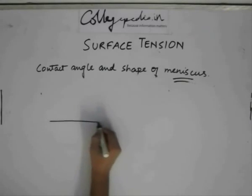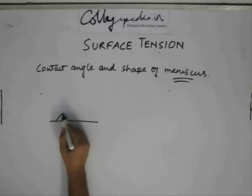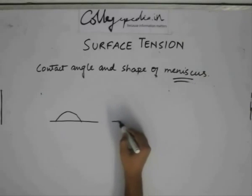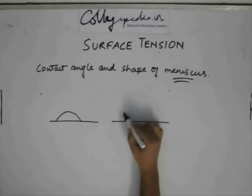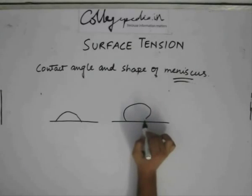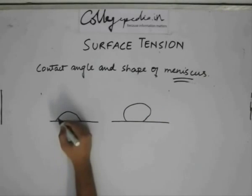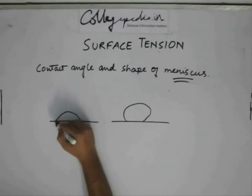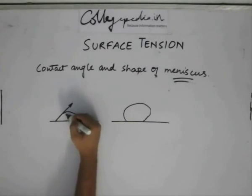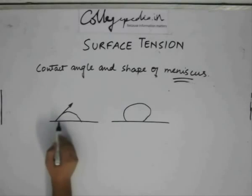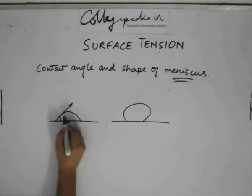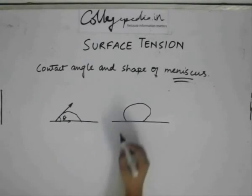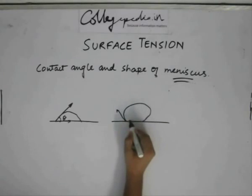Say we have a flat plate like this, and we have a liquid drop of this sort on another flat plate. Applying what we just stated: the tangent to the liquid interface away from the solid, and the tangent along the solid phase within the liquid — these define our contact angle theta.